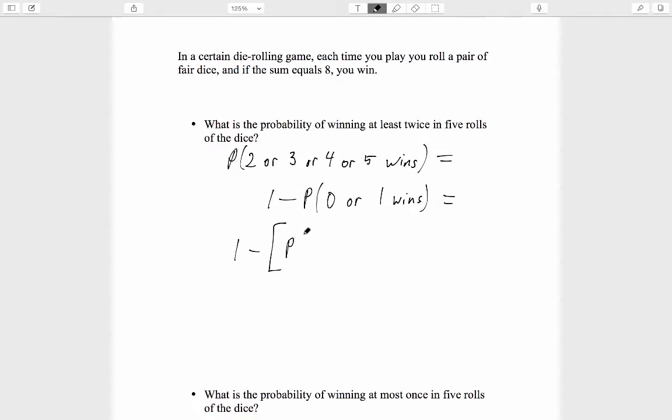First, let's keep our algebraic wits about us and remember that there are parentheses here. The probability of 0 or 1 wins is the probability of 0 wins plus the probability of 1 win. All of that is in parentheses, and therefore the addition must be done before we subtract from 1.